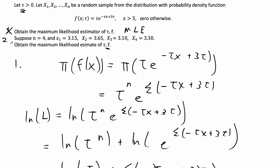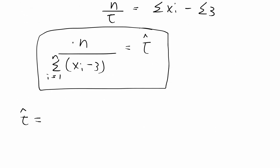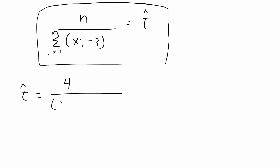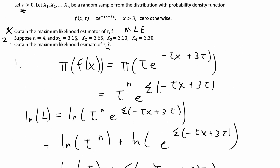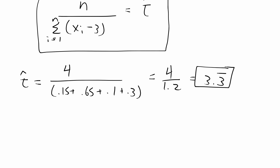That's the solution for part one. For part two, we just plug in four observations to get an actual value of tau-hat. Tau-hat equals n over the sum of x_i minus 3. We have four observations with values such that each x_i minus 3 gives 0.15, 0.65, 0.1, and 0.3. So tau-hat equals 4 over (0.15 plus 0.65 plus 0.1 plus 0.3), which gives 4 over 1.2, or approximately 3.33 repeating. And we're done with this problem.